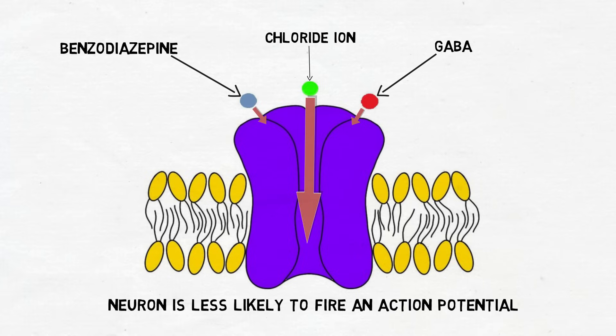This type of neural inhibition is the basis for the effects of benzodiazepines, for by inhibiting the activity of neurons that make up networks involved with anxiety and arousal, the drugs are able to produce calming effects.